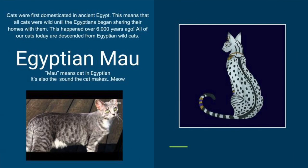Cats were first domesticated in ancient Egypt. This means that all cats were wild until the Egyptians began sharing their homes with them. This happened over 6,000 years ago. All of our cats today are descended from Egyptian wild cats.